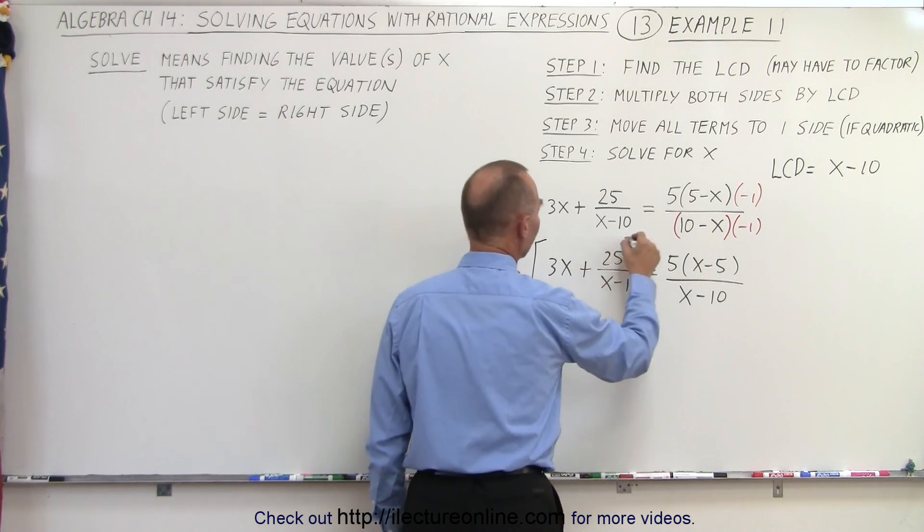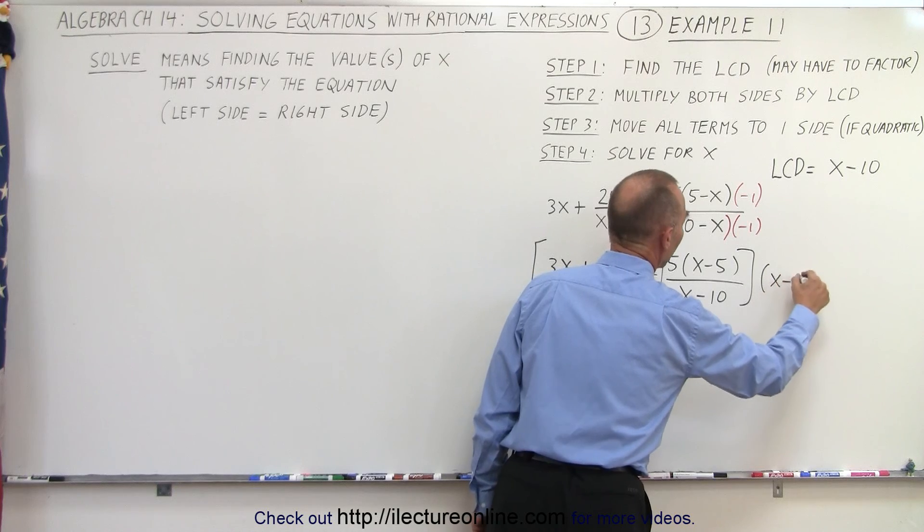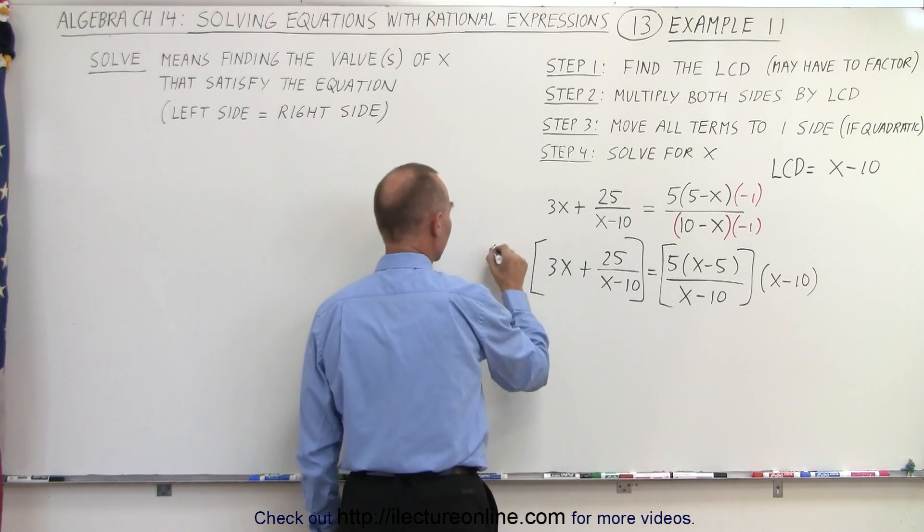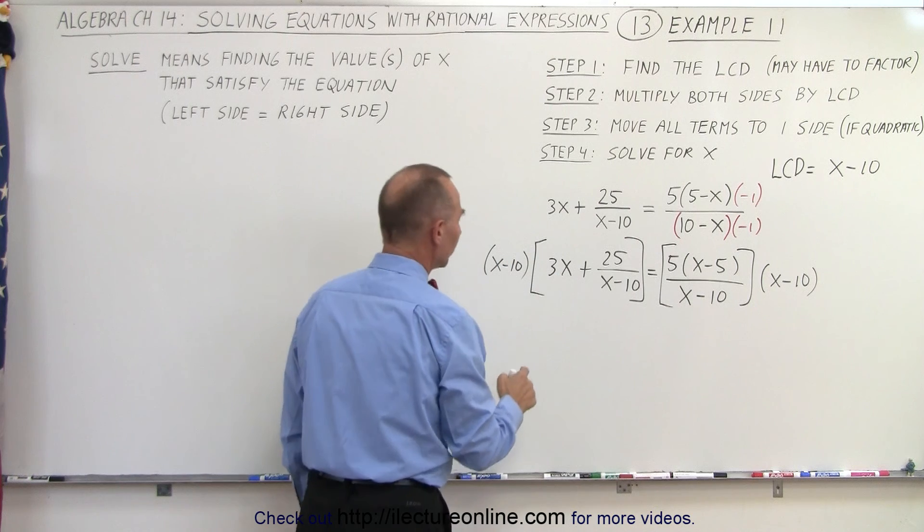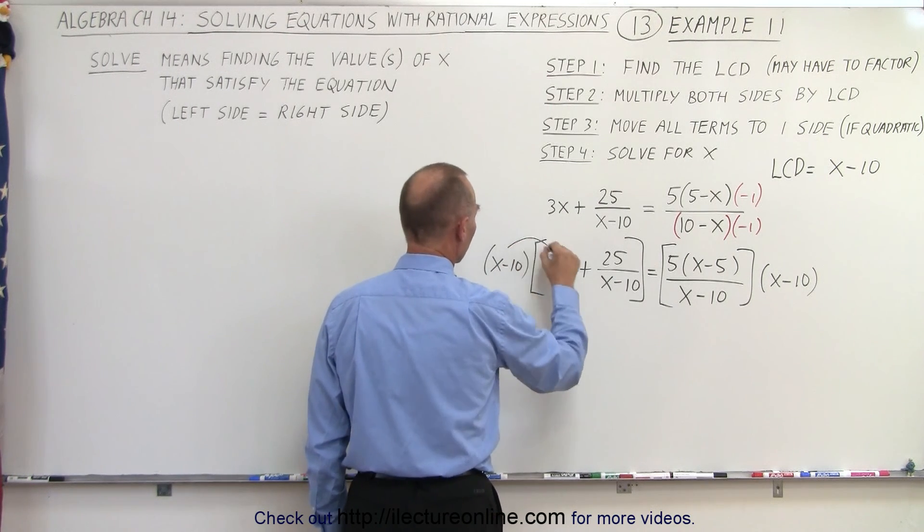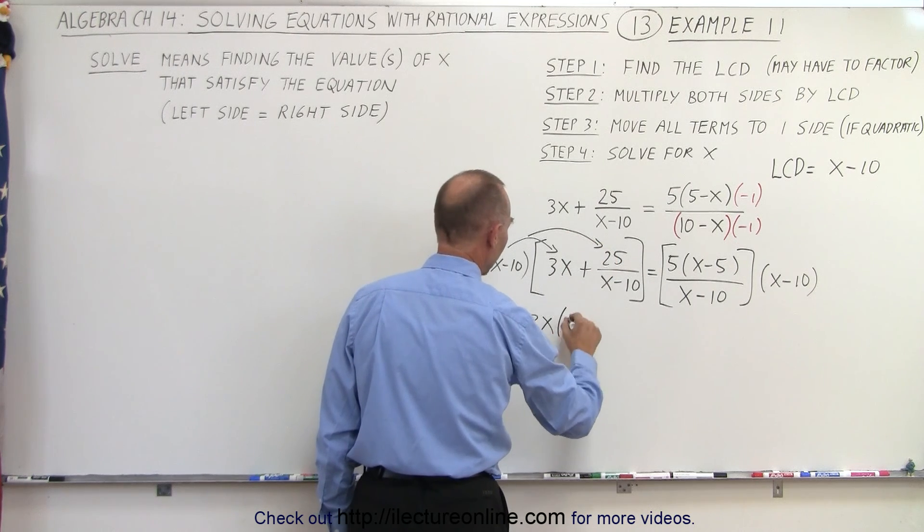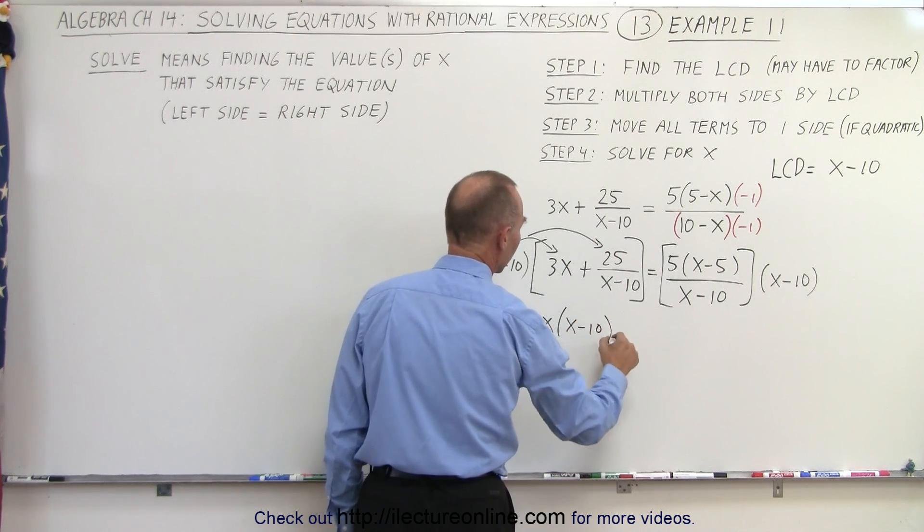Now I'm going to multiply both the left and the right side of the equation by the lowest common denominator of x minus 10. When we do that, notice there's no denominator here, so we simply multiply the two together. So multiply this and this term, so we get 3x times x minus 10 plus,